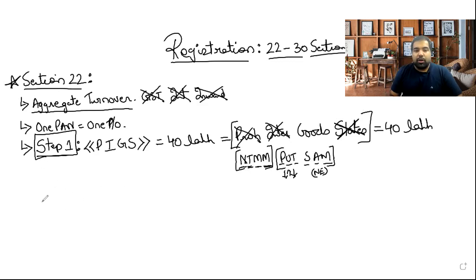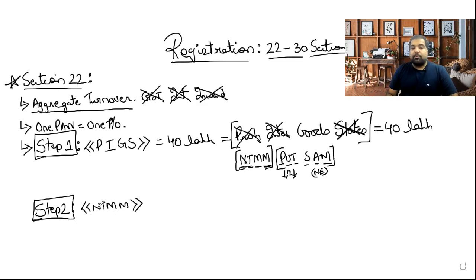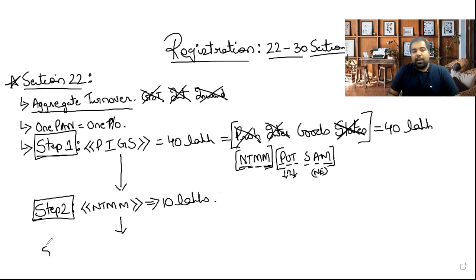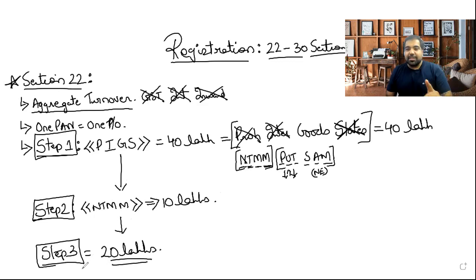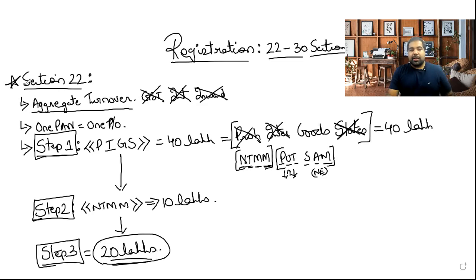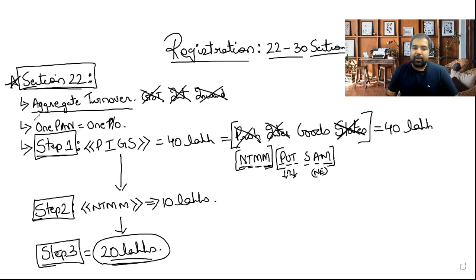Step 2: If you're not in Step 1 — specifically if you are in NTMM (Nagaland, Tripura, Manipur, Mizoram) — your limit is just 10 lakhs. Step 3: If you're not in Step 1 and not in Step 2, your default limit is 20 lakhs. So: PIGS + not in NTMM/PUTSAM = 40 lakhs; in NTMM = 10 lakhs; otherwise = 20 lakhs.